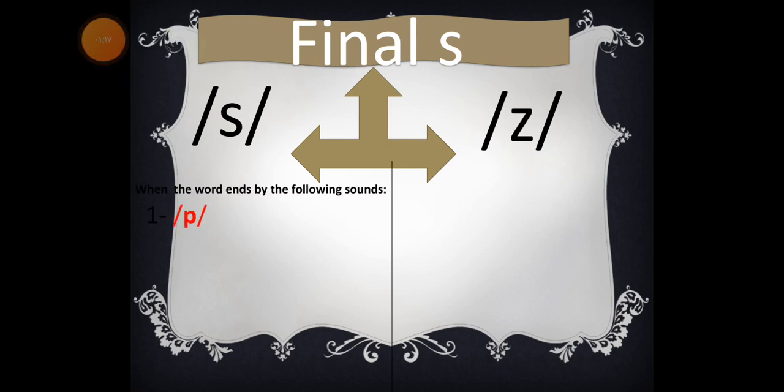And now let's learn more about it. Final 's' is pronounced like /s/ when the word ends with the following sounds. Number one: the /p/ sound, for example caps. Second example: cups, cups. Number two: the /t/ sound.